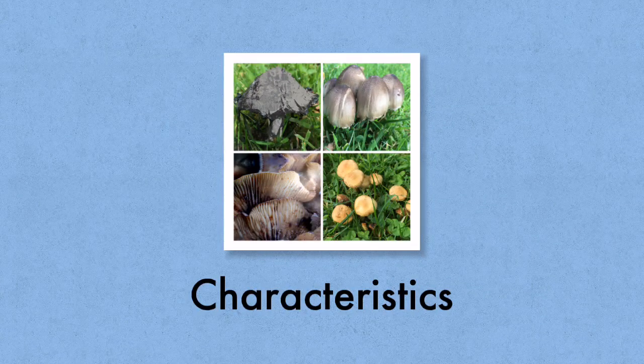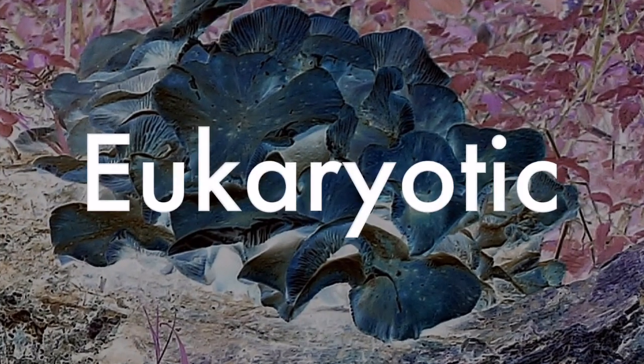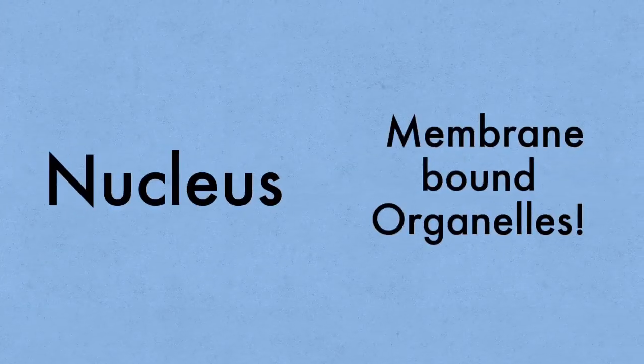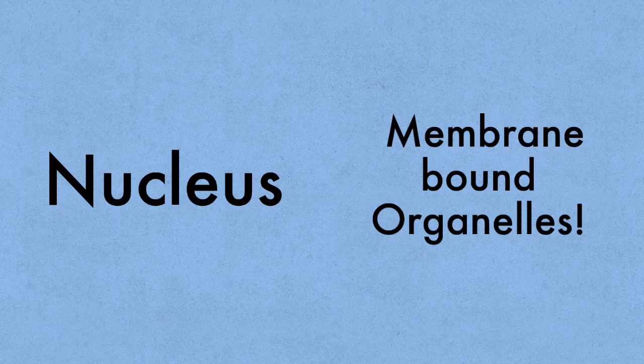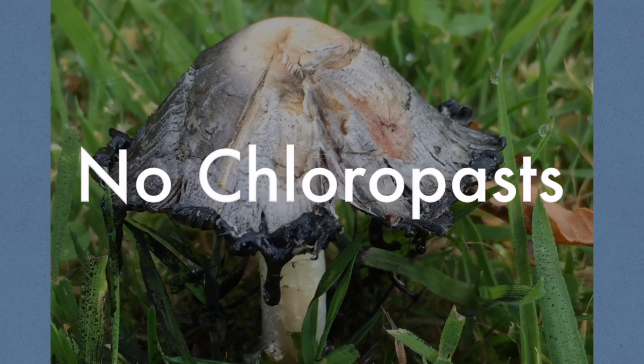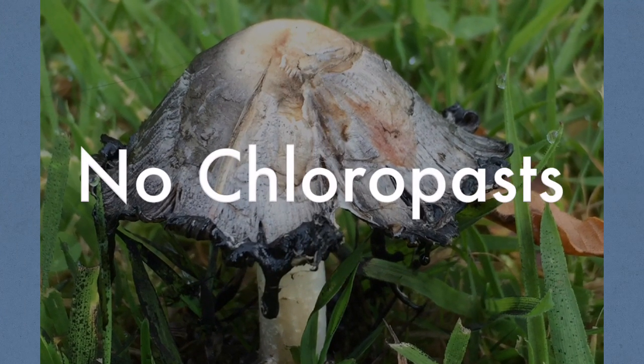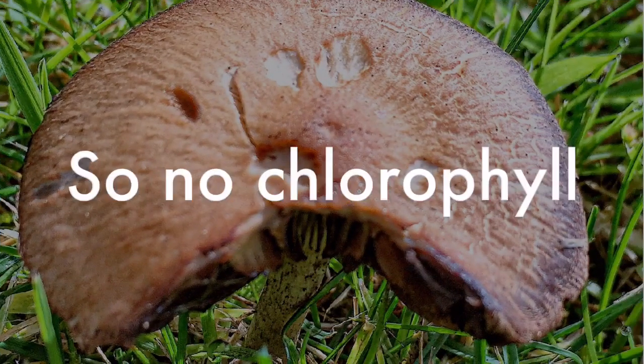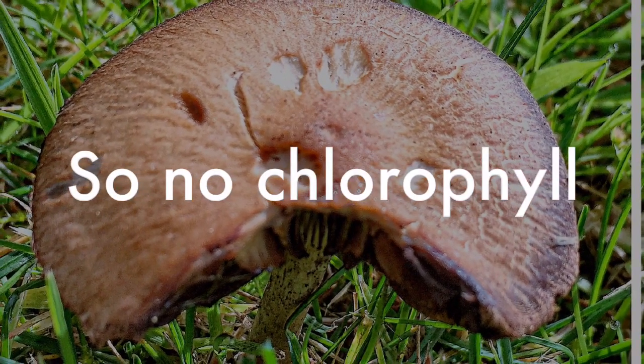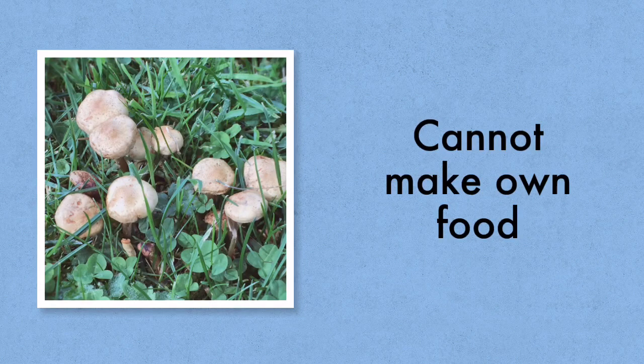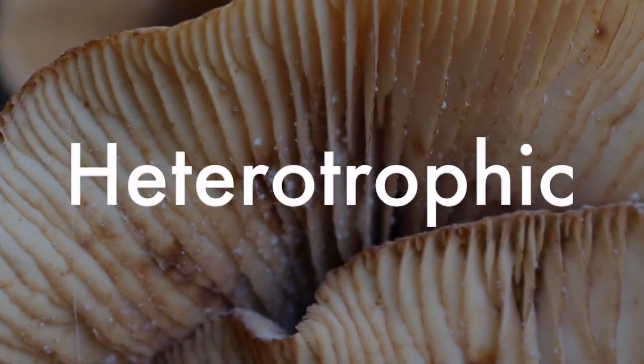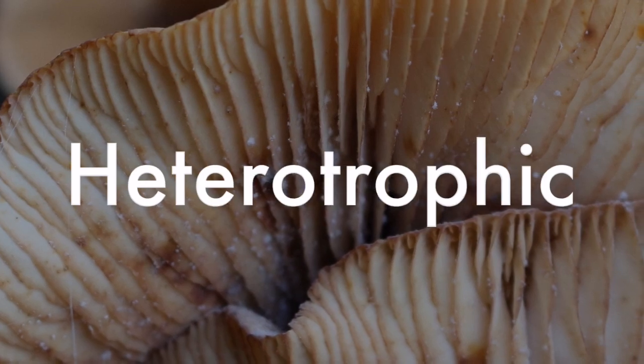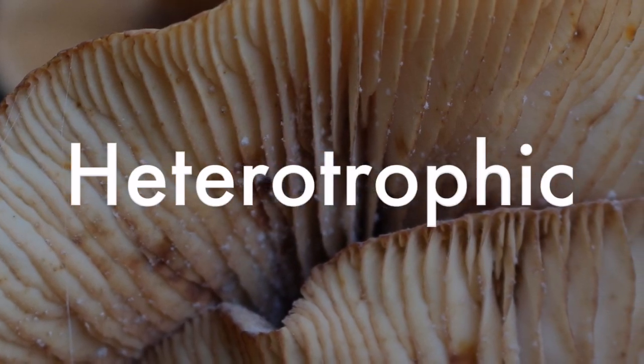The characteristics of the fungi kingdom. Fungi are eukaryotic so their cells contain a membrane-bound nucleus and membrane-bound organelles. It's very important to note that no fungi contains any chloroplasts in their cells and if there are no chloroplasts there's no chlorophyll, and if there's no chlorophyll it means that they can't make their own food.